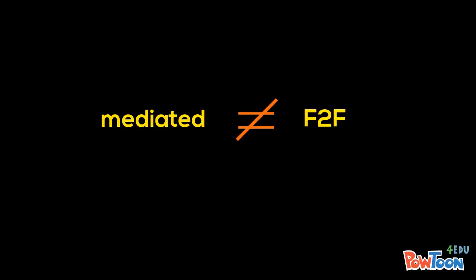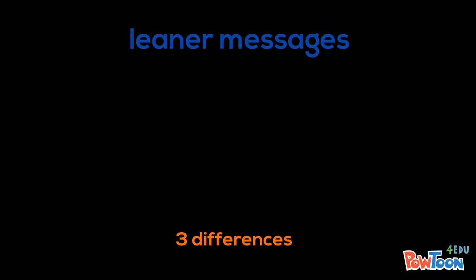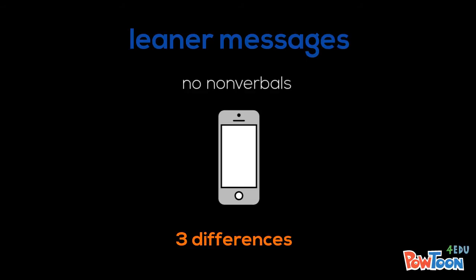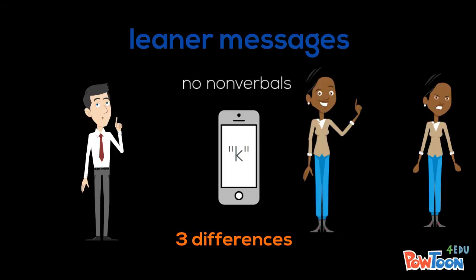Mediated and face-to-face communication aren't exactly the same though. There are three major differences between the two. There is the aspect of mediated communication having leaner messages. Leanness in this case refers to the lack of non-verbal information. Think of when you receive a text message that reads 'K.' What does this mean? Does it just mean okay, or is this person mad about something? You can't see the other person's face or hear their tone of voice. It is hard to tell if they are happy, sad, angry, being serious, or just joking around.